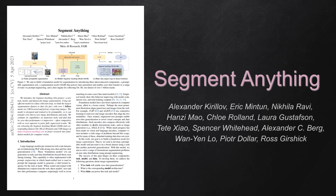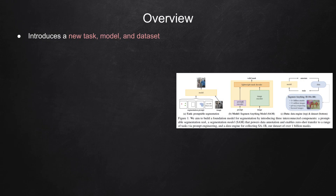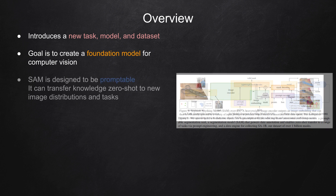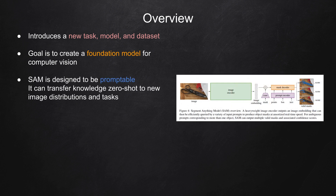Today's paper is called Segment Anything. The Segment Anything paper introduces a new task, model, and dataset to the world of image segmentation. Its primary goal is to create a foundation model for computer vision, allowing for more efficient and accurate image segmentation across a wide range of tasks. The proposed model in the paper is called the Segment Anything Model, also called SAM.